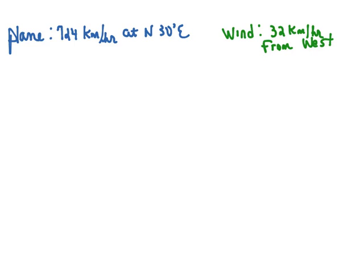If we go back and look at the example we just worked, that I worked using vector operations, we have a plane, and the plane is going 724 kilometers per hour at a bearing of north 30 degrees east.